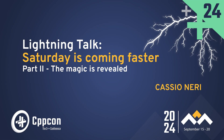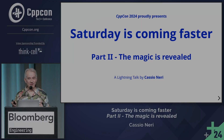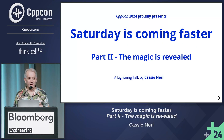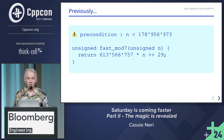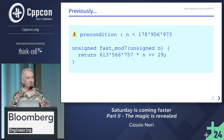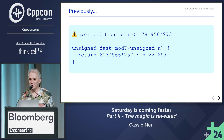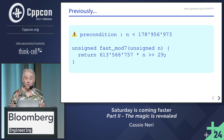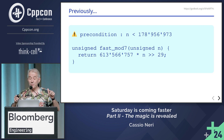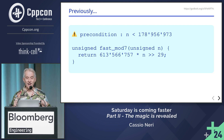Yesterday I showed you a function that converts year-month-day to week-day three times faster than the standard way. It boiled down to a magic function that gets modulo seven much faster than the built-in operator. So today I'm going to explain how this magic works.